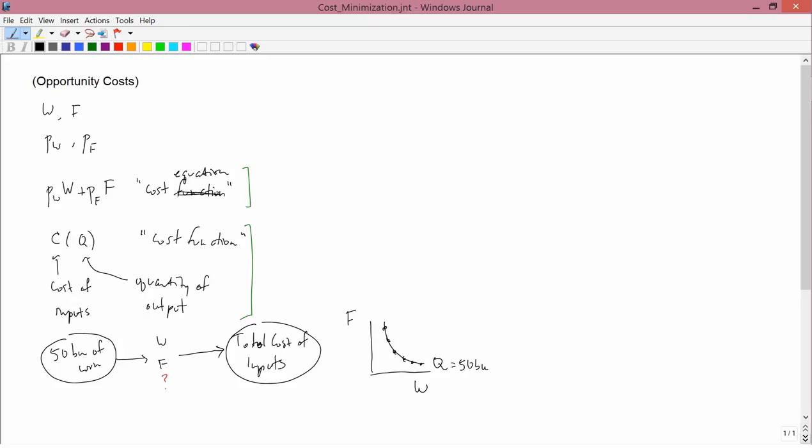Now, as I said, this is going from 50 bushels of corn to the total cost of inputs is broken up into two parts. There's an easy part and a hard part. This part's easy. This part's hard. We're going to spend a lot of time in this chapter doing the hard part. In this particular video, this first video, though, we're just going to concentrate on the easy part, which is going from W and F to the total cost of inputs, which is this part, this initial part, going from W and F to the total cost of inputs.